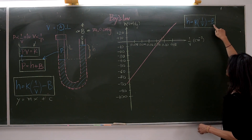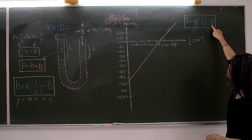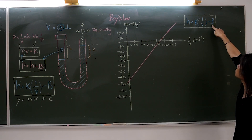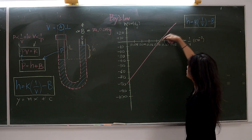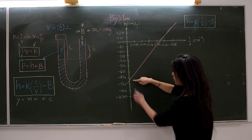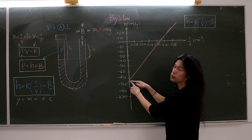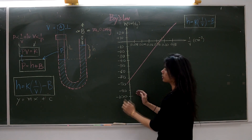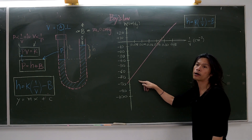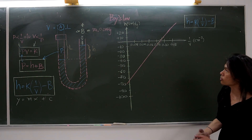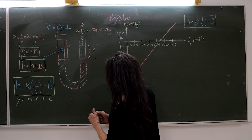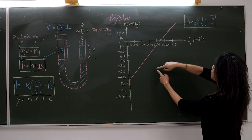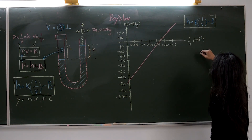The other value is atmospheric pressure B, which is the Y-intercept of the graph. To find B, we extend the graph line to intercept the Y-axis and read the Y-intercept value, which gives the atmospheric pressure. Note that the atmospheric pressure must be a positive value. So today's experiment studies Boyle's law by recording experimental data, drawing the graph, finding K from the slope, and finding atmospheric pressure from the Y-intercept.